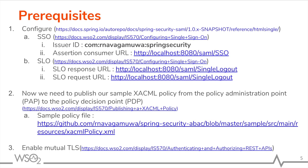The main requirement to configure Mutual TLS between the SDK and WSO2 IS is to install the public certificates of the servers in each other's trust stores. Refer to WSO2 docs to get more information on authenticating and authorizing REST APIs.